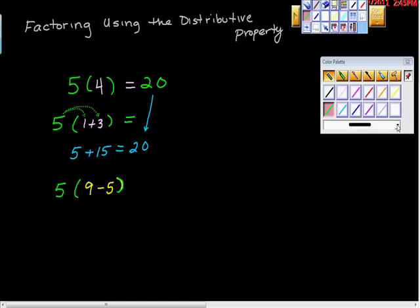5 times 9 is 45. 5 times negative 5 is negative 25. And again, 45 minus 25 is 20. Nothing changed. And it's really, really important that we're kind of thinking that way. Okay.